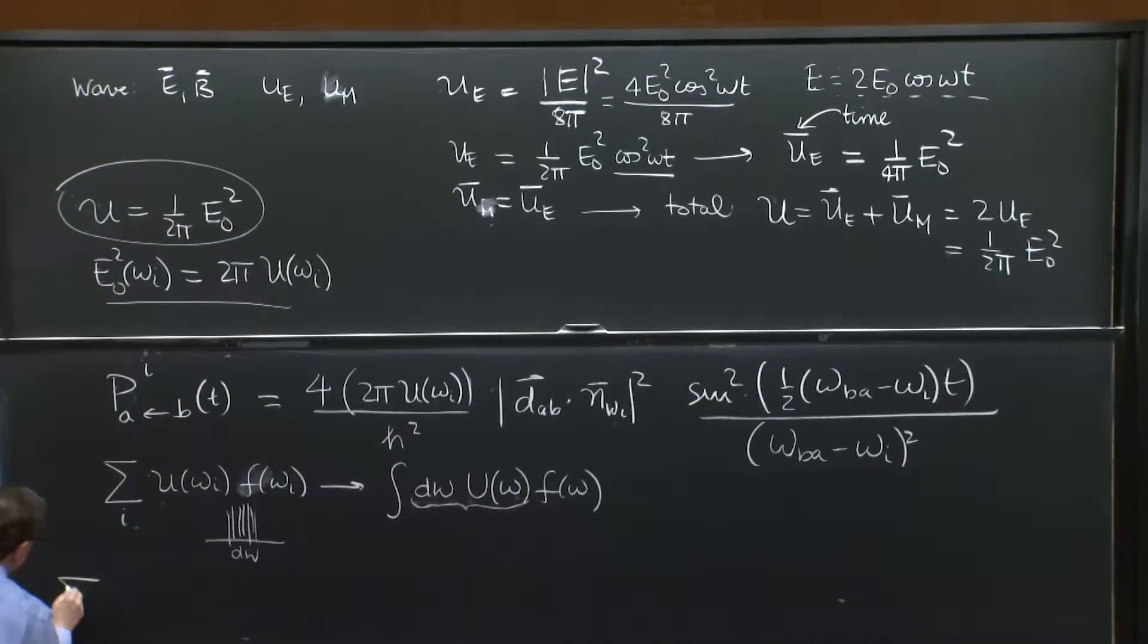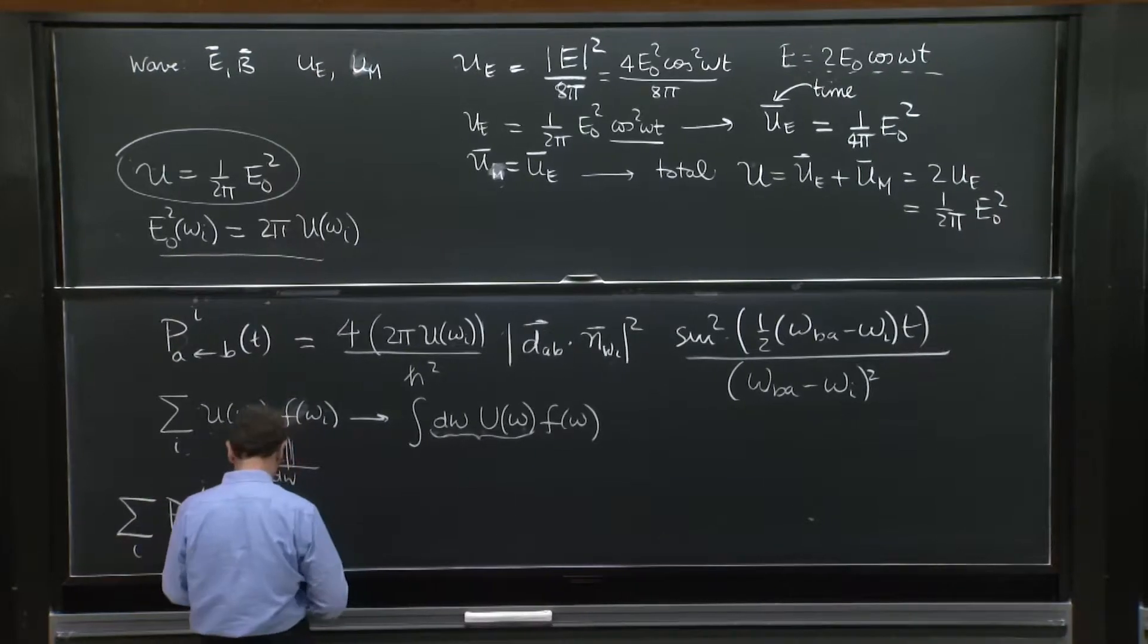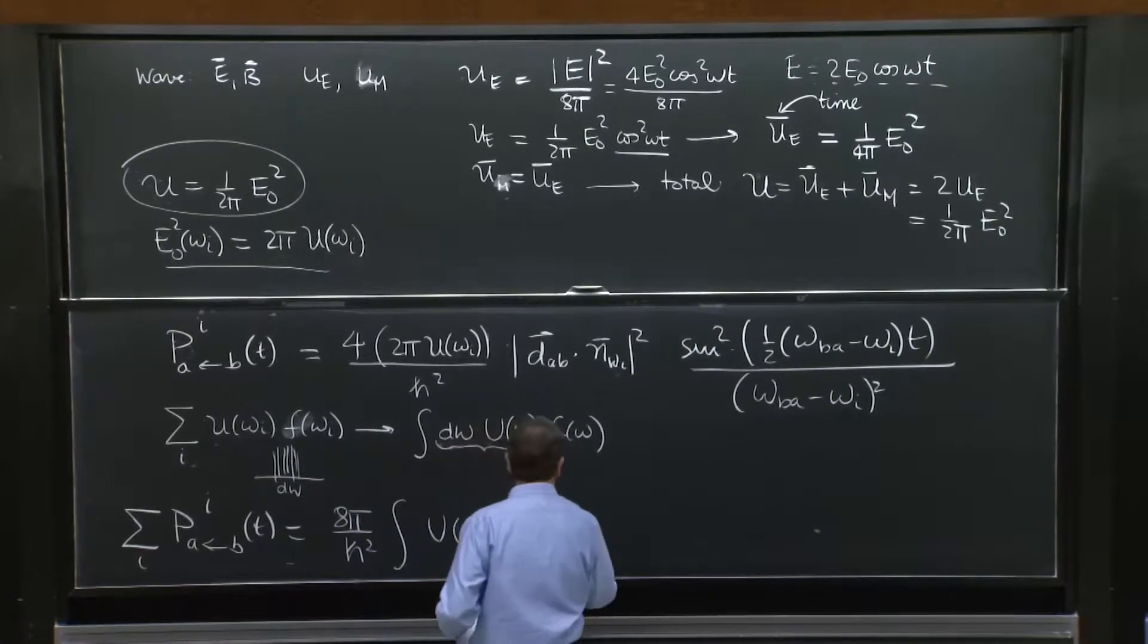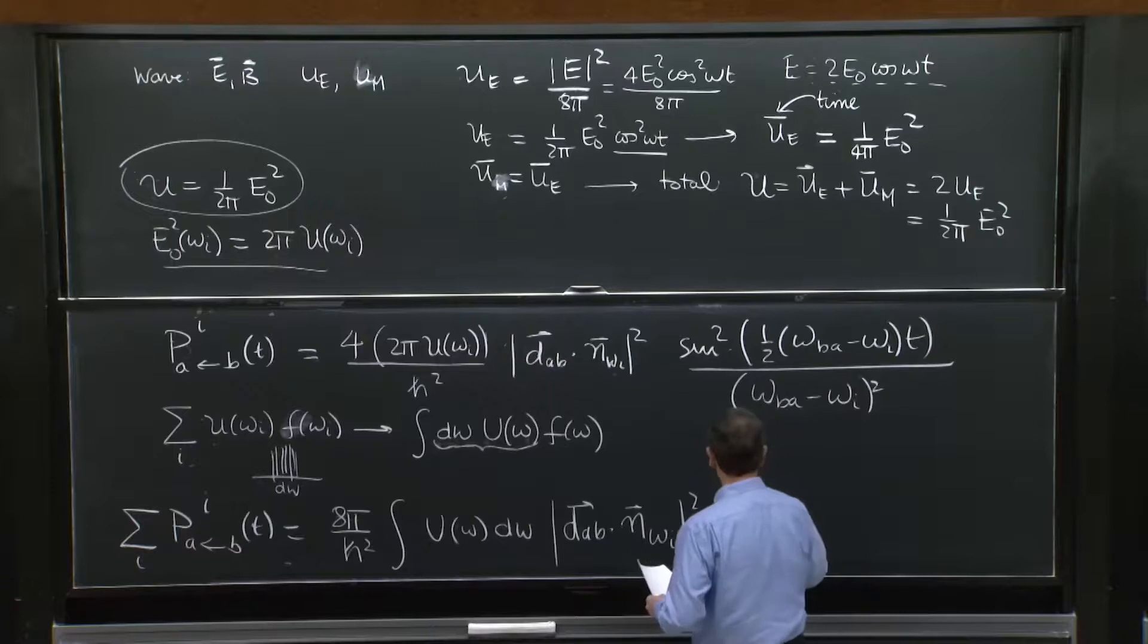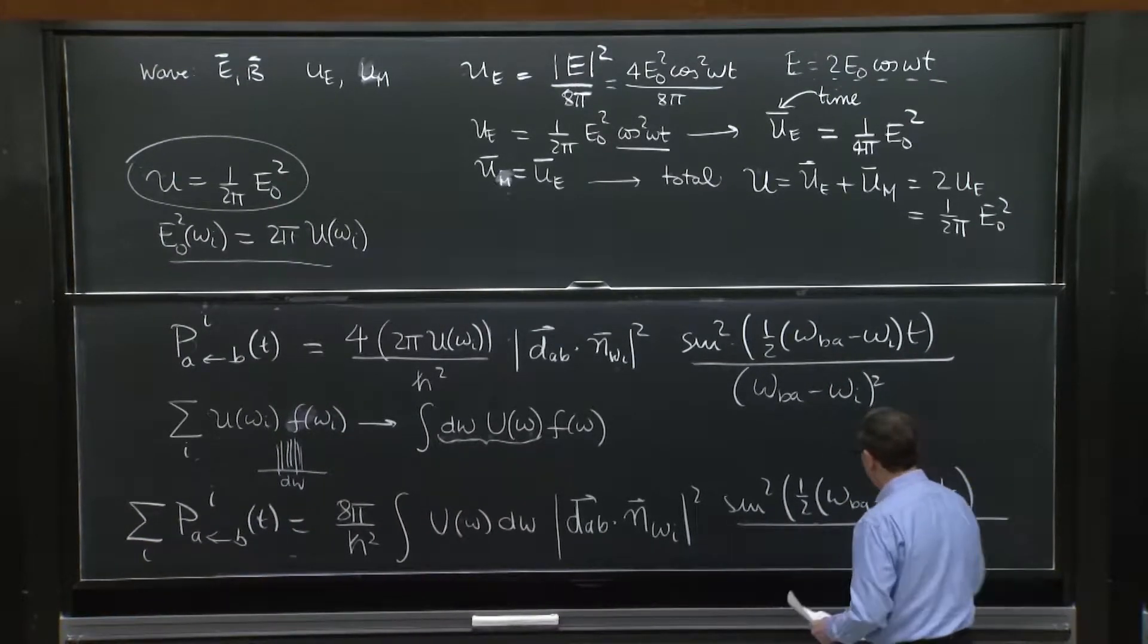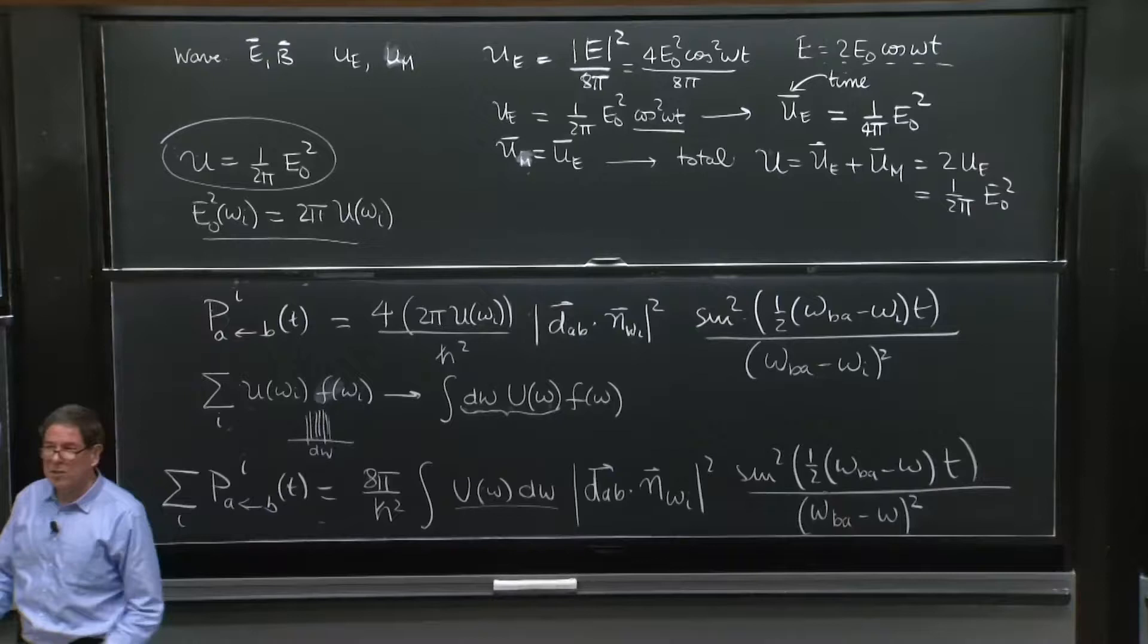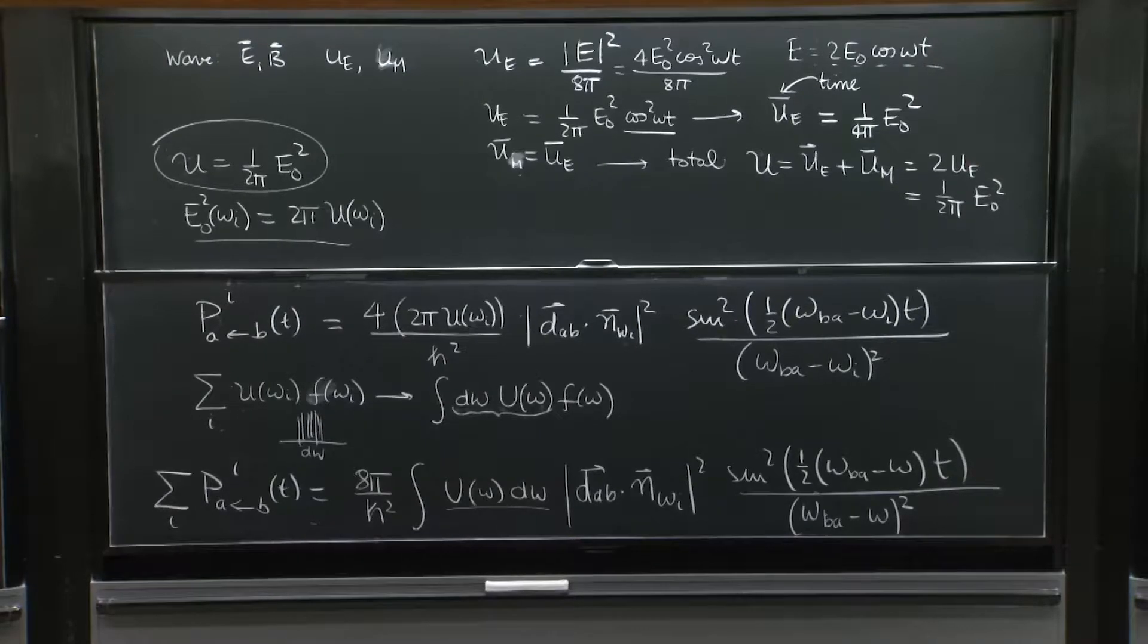So we'll say that we have the sum over i of P_ab i of t equals 8π over h squared integral u of omega d omega d_AB n omega sine squared of 1 half omega BA minus omega t. So all the omega i's have become omegas. That's the variable of integration. And this is information about your radiation field. If it's black body radiation, we gave the formula last time.